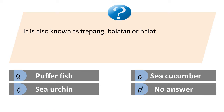It is also known as trepang, balatin, or balat. A) puffer fish, B) sea urchin, C) sea cucumber, D) no answer. The answer is sea cucumber. It is primarily traded as trepang, beche-de-mer, or hai shen — terms for dried sea cucumbers.